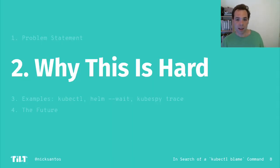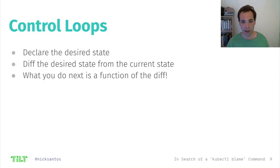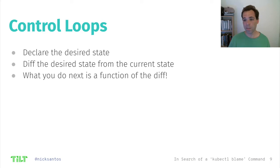So let's talk about why this is hard. The fundamental Kubernetes architecture is a control loop. The system runs in a loop. You declare a desired state, and what the loop does next is a function of the diff between the desired state and the current state.